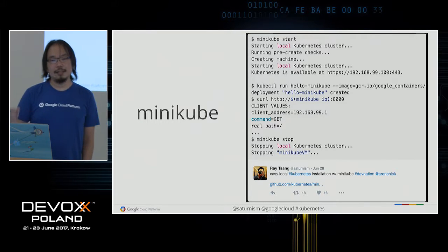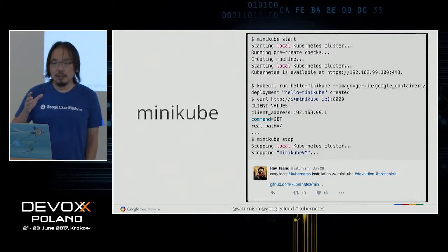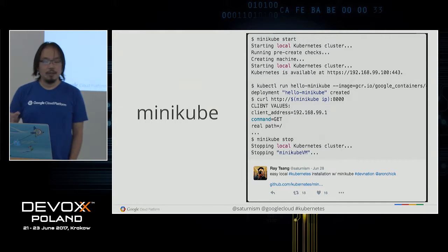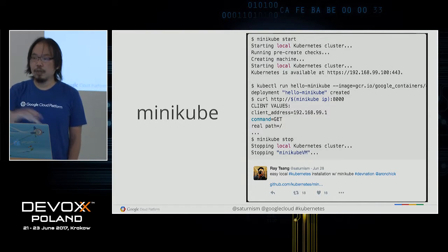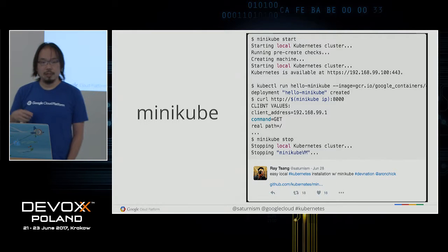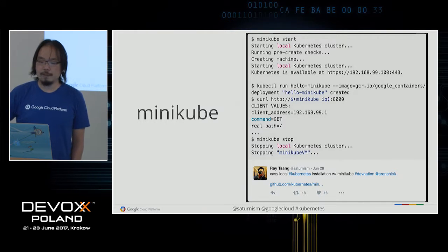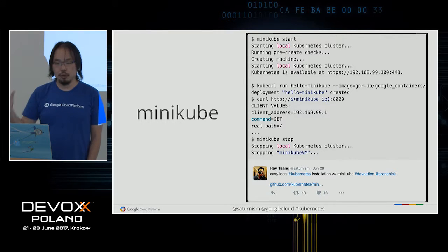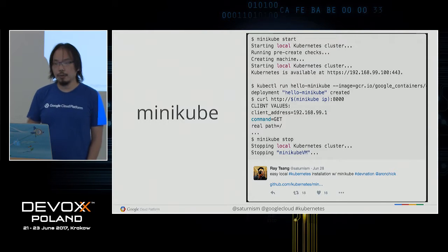We're going to go beyond that and ask: what if your application is a global system? What if you have users all over the world? Then running your services in a single region, in a single data center, is no longer enough. You may have to run your services across the world, across multiple regions. To do that, we're going to be provisioning multiple clusters — each Kubernetes cluster running in a different region — and see how we can control all of them through a single federation control plane.